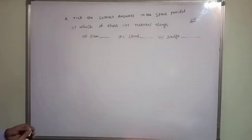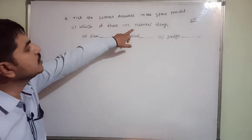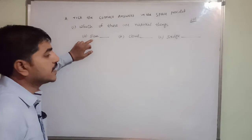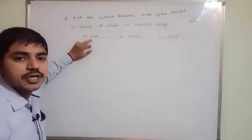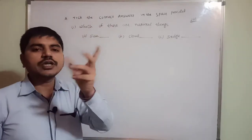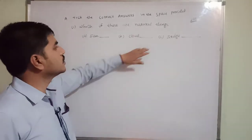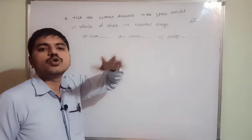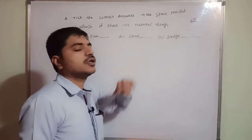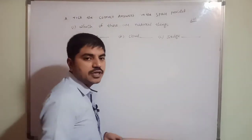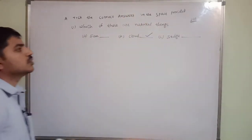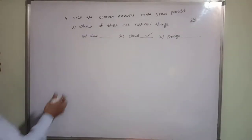The first question: which of these are natural things? The fan is not a natural one - the fan is artificial, man-made. Bridge is also man-made. But cloud - we cannot create a cloud, that's why it is a natural one. So cloud is the correct answer for that.